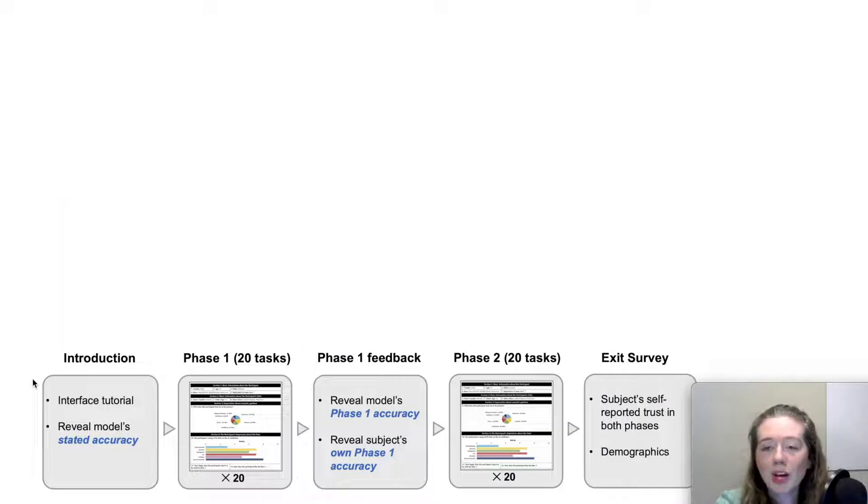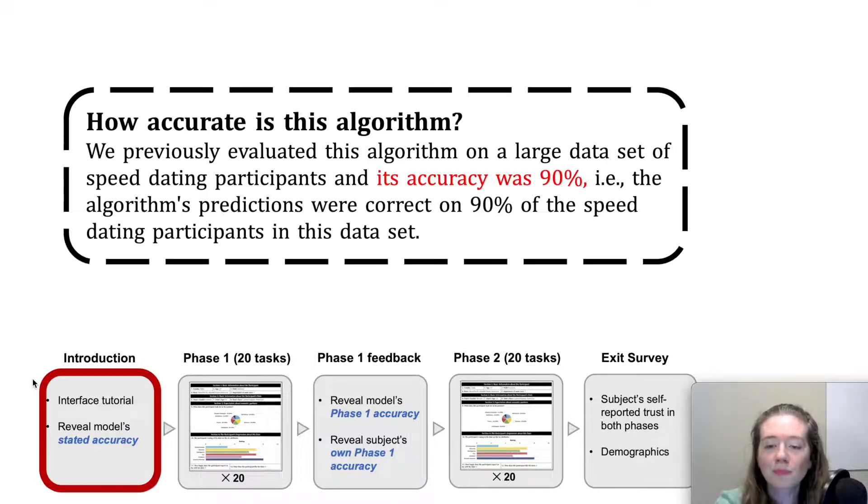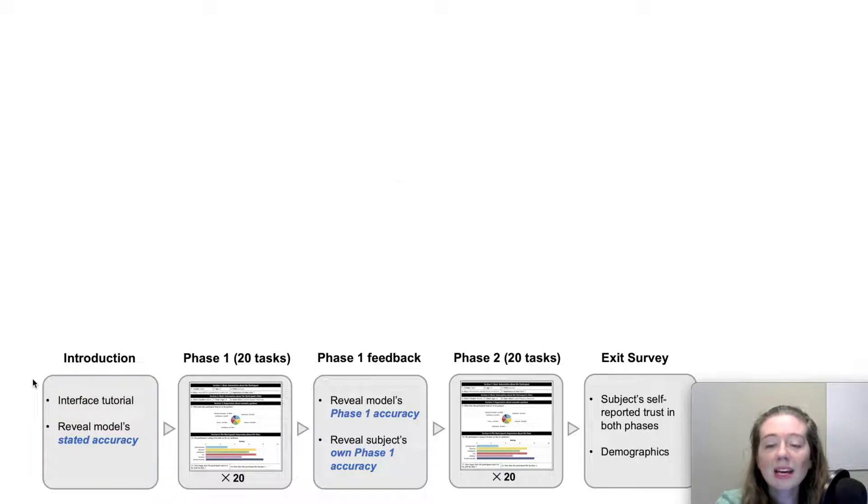In this experiment, we asked subjects to complete a sequence of tasks on predicting the outcome of speed dating events with the help of a pre-trained machine learning model. Before working on any tasks, the subjects were told the machine learning model's stated accuracy on a large set of held out data.